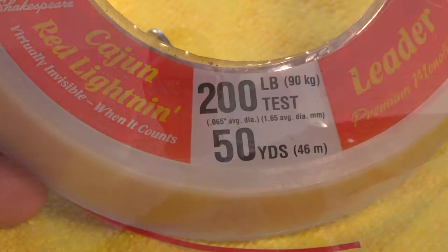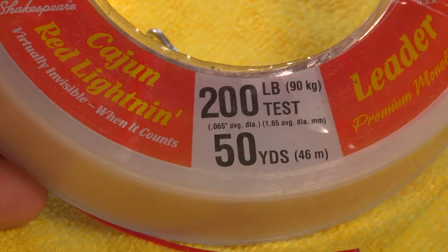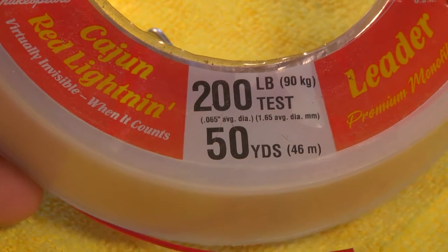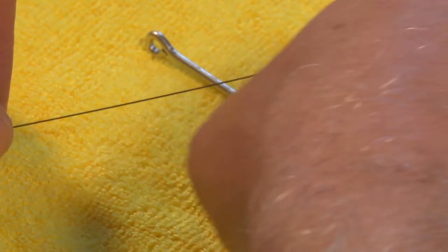There are some toothy critters in the ocean that can bite through even the heaviest monofilament lines like sewing thread. The way to get around that and get those fish to the boat is to use wire leader.